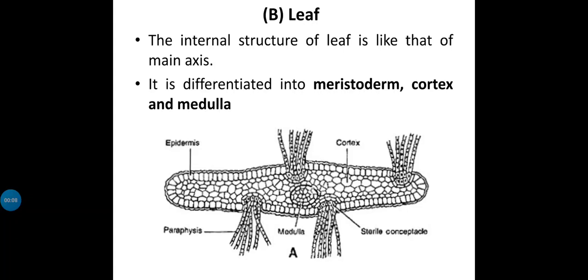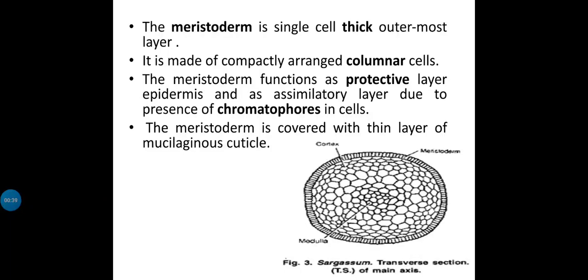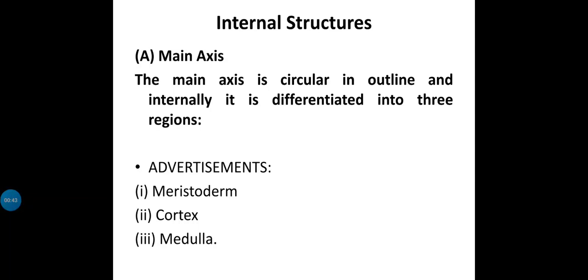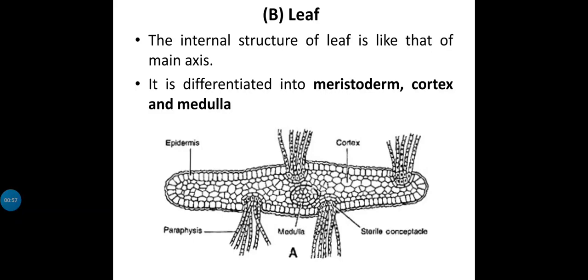Hello, welcome back students to our online lecture series on paper number B101 of your first semester botany. In previous lectures we talked about unit number one and learned two different types of algae examples. The first is Spirogyra and the second, which we are continuing to study today, is Sargassum. In Sargassum, we studied different internal structures: first is the main axis, which is made up of mesoderm, cortex and medulla. Next is the internal structure of the leaf in Sargassum, which is similar to that of the main axis.